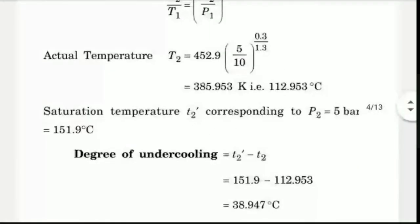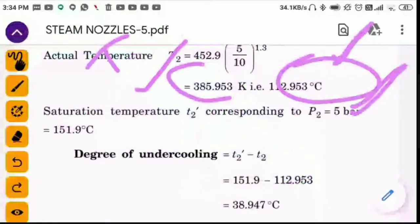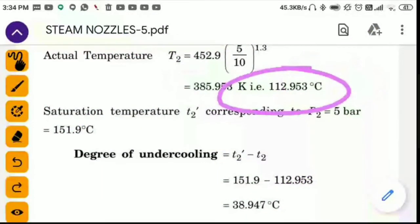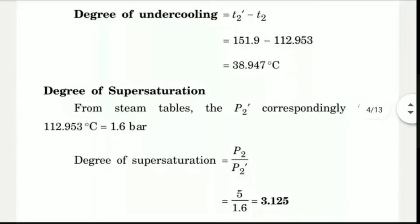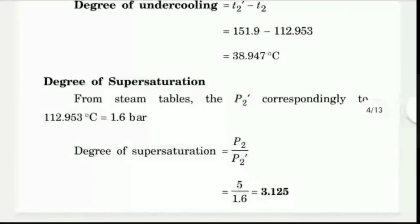If you are using P2 dash, it is available from the tables. From steam tables, at 112 degrees Celsius, we get 1.6 bar. So P2 equals 5 bar divided by P2 dash equals 1.6 bar gives the degree of supersaturation equals 3.125.